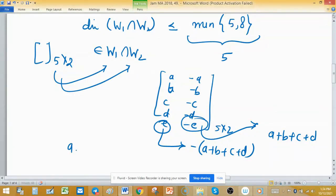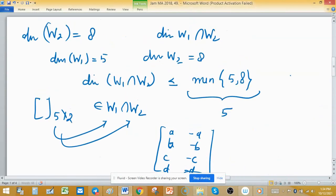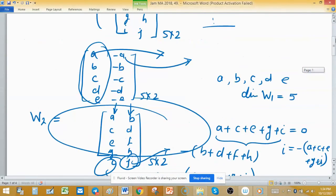What we have, we have only A, B, C and D are independent choices. We have only 4 independent choices. So dimension of intersection is 4, because these 4 entries only contribute in spanning. W1 intersection W2 equals 4. You can see here dimension of intersection is 4 and 4 is less than or equal to 5. So this property also holds. So answer of this problem is 4.